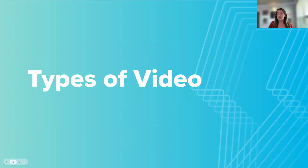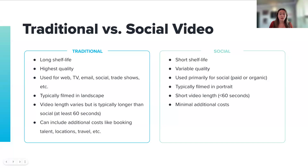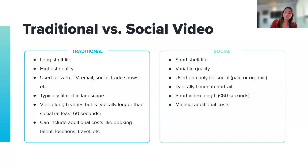To help you get started with social video, we're going to jump into some types of video — looking at when it's right to spend more time and resources versus doing a quick social video. On one side, you have traditional video, which refers to the production process that has been around much longer than social media. It's often professionally filmed with experts in filmmaking techniques, long-form storytelling, and highly skilled in video equipment production and set design. Traditional video is intended to have a long shelf life and is typically higher quality. The end platform might be TV, websites, and email campaigns.